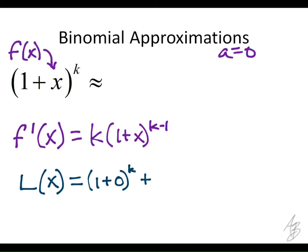Plus the derivative at 0. The derivative at 0 is k(1+0)^(k-1). And what is this part going to be? 1.